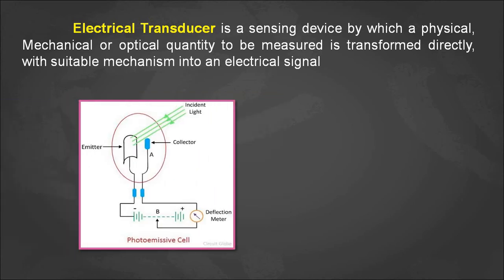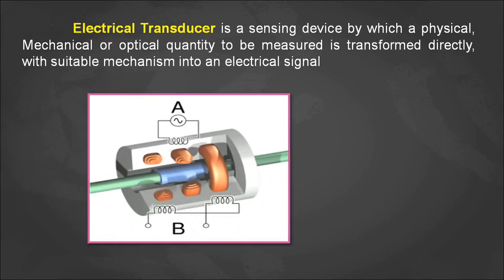Another example of an electrical transducer is the photo emissive cell — depending upon the light intensity, the output voltage will vary. It is also an active transducer; we don't need any external supply for converting light intensity into a considerable voltage. Another example is LVDT, which is an inductive transducer where the input displacement is converted into a change in inductance, which can be directly converted into output voltage.